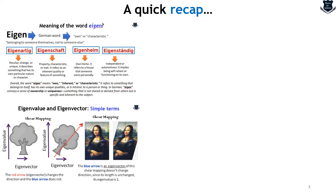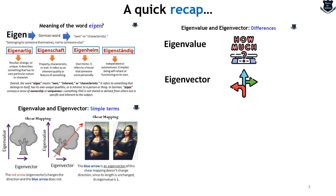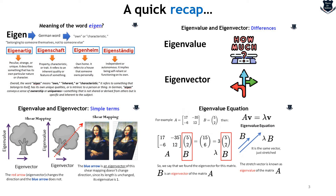Overall the word Eigen means own, inherent, or characteristic. From there we found that Eigenvalue and Eigenvector on a pictorial representation can be something like this. As you can see the Eigenvector remains unchanged — in case of this shear mapping of the picture of Mona Lisa the blue arrow is an Eigenvector and remains constant, whereas the Eigenvalue actually changes. So overall, Eigenvalue means more or less how much an Eigenvector shows the different kind of directions.